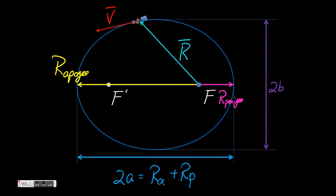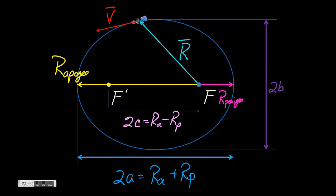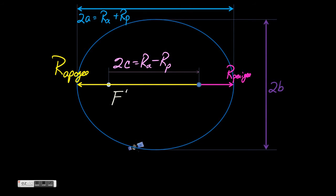R apogee minus r perigee gives us the distance between the two foci — we'll call that 2c. Next, we'll define nu, the true anomaly, as the angle from perigee to the satellite's current position, measured in the direction of satellite motion. We'll get one more useful angle by drawing a line that shows the local horizon for our satellite — a line perpendicular to our position vector — and defining the satellite's flight path angle, phi, as the angle from the horizon to our velocity vector.